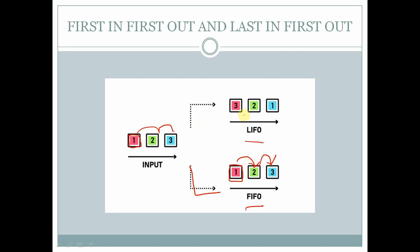Whereas in the case of last in first out, the third element is inserted at the end after these two elements. But in last in first out methodology, the third element is released and exits first from the queue, followed by the second element, and at the last the first element will be exited. This is about first in first out and last in first out.